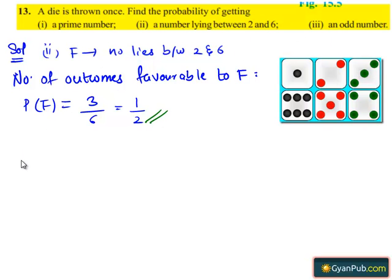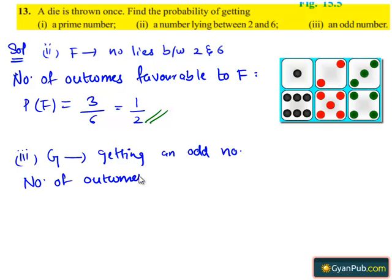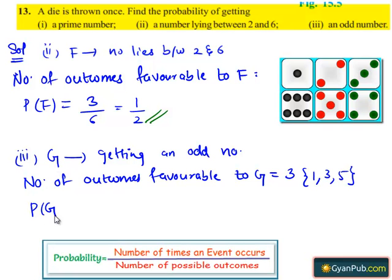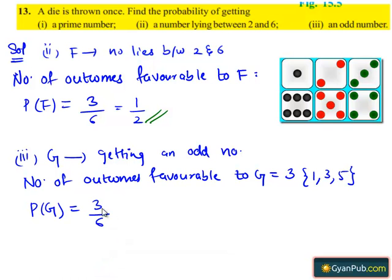Now moving on to the third part. Let G be the event of getting an odd number. The number of outcomes favorable to event G equals 3, which are 1, 3, and 5. Then P(G) = 3 divided by 6. Here 3 is a common factor, so 3 divided by 6 is one half. Therefore the probability of getting an odd number is 1 divided by 2.